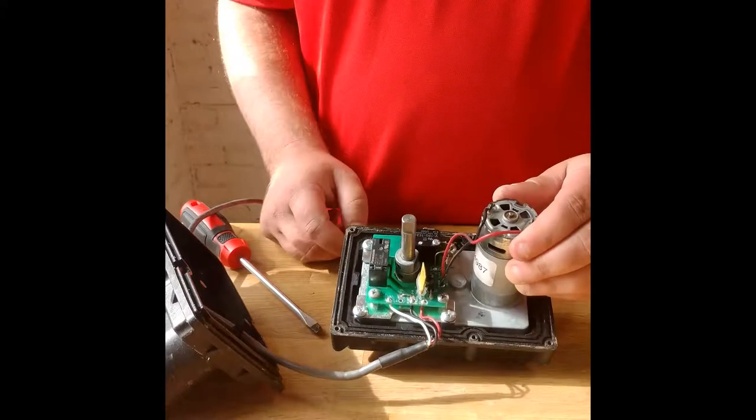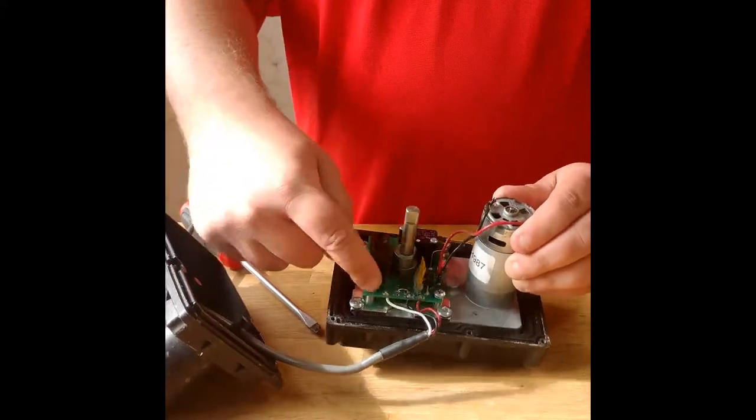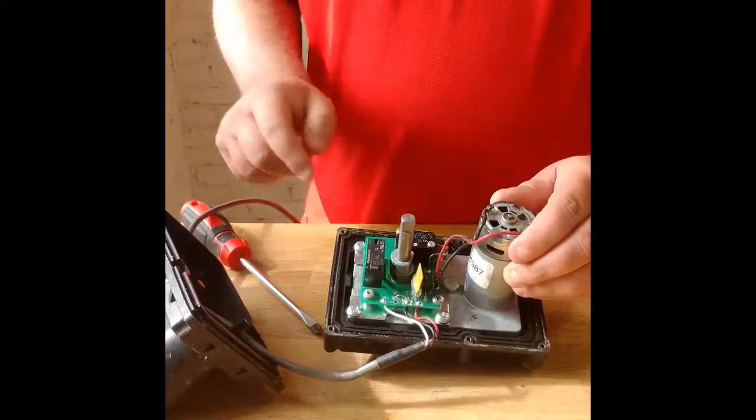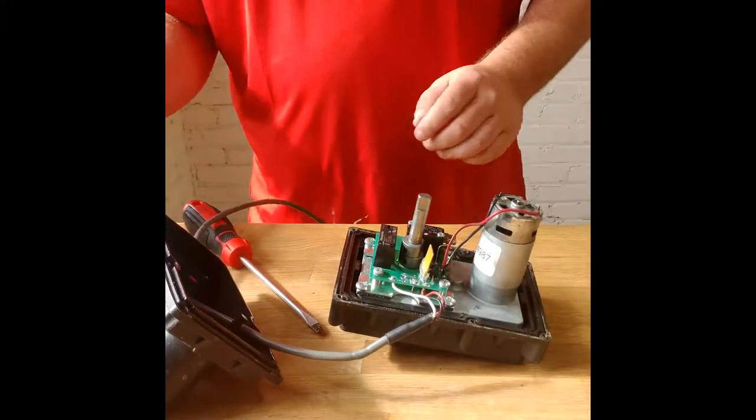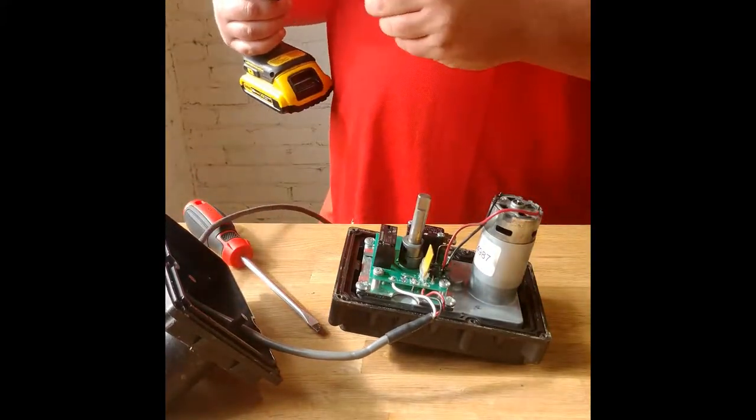There's four screws that hold down the circuit board to the gear housing. And you just remove those to pull that circuit board up.